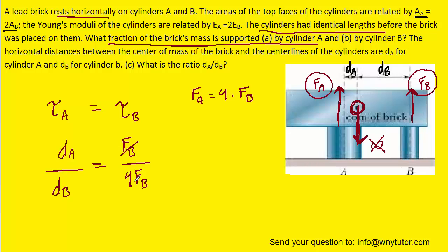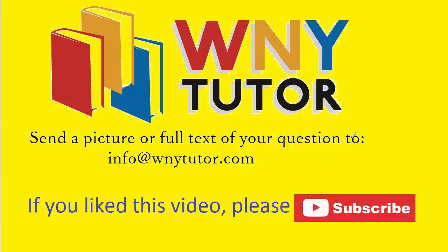Once we cancel out the F sub Bs, we see that the ratio of DA to DB is equal to 1 fourth, or 0.25. That's the correct answer to part C. Thanks for taking the time to watch the video. If you liked it, please click the thumbs up icon and subscribe to the channel so you can stay tuned for additional videos. You are also welcome to send in your own question to the email address shown on the screen and I'll do my best to post the solution to it on YouTube.